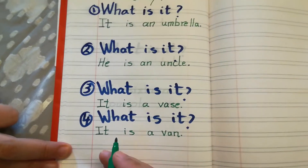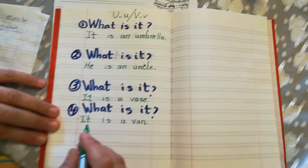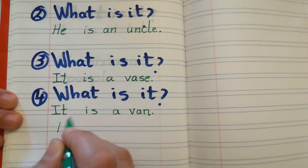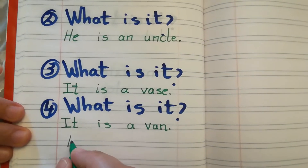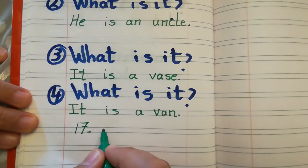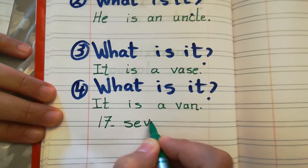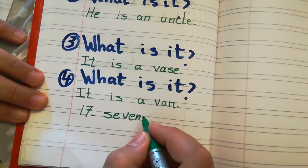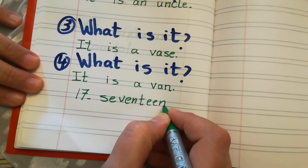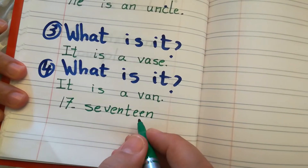Our number today is number 17. How to write 17: S, E, V, E, N, T, E, E, N. Seventeen. 17.